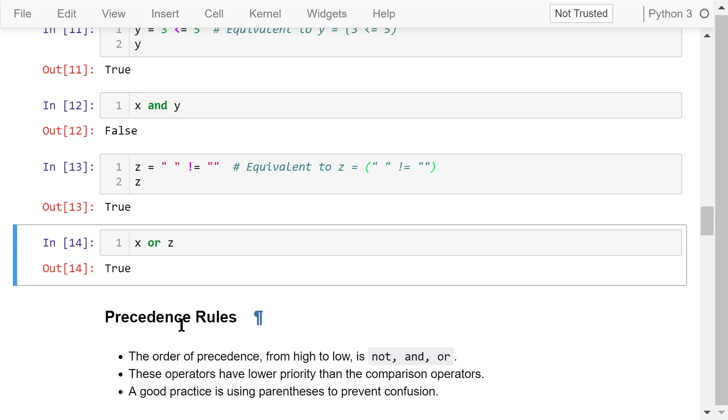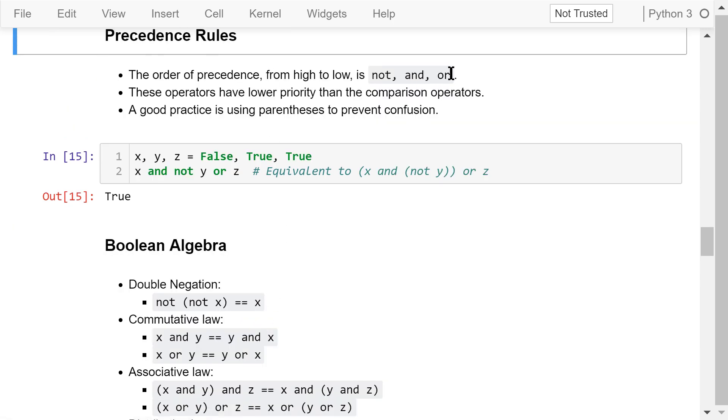The interpretation of complex Boolean expressions relies on the precedence rules for the operators. The order of precedence from high to low is not, and, or. These operators have lower priorities than the simple comparison operators I mentioned earlier. For complex expressions, it is recommended to use parentheses to prevent confusion.